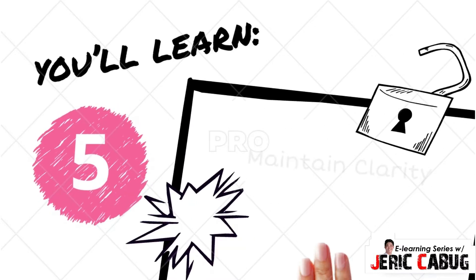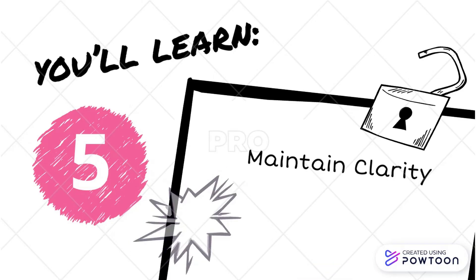Another tip is to maintain clarity. Have you ever written a lengthy sentence only to read it again, not fully comprehending what you just wrote? The moment you catch that happening, you have to fix it immediately. If you are lost in your own sentences, there is no way you can expect a reader to understand it. When you come across this hurdle, it is best to start afresh and rewrite the sentence, or break it apart and replace it with two shorter sentences.